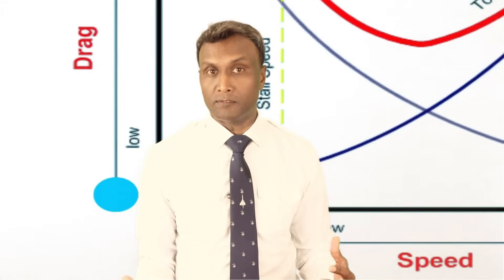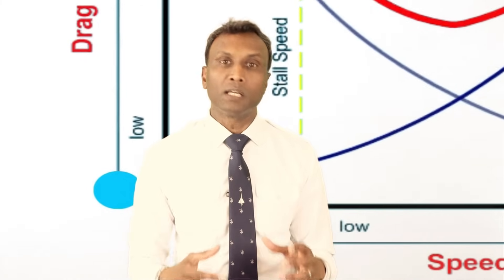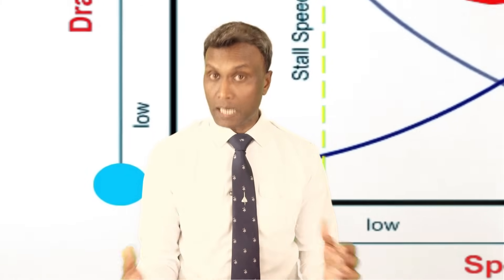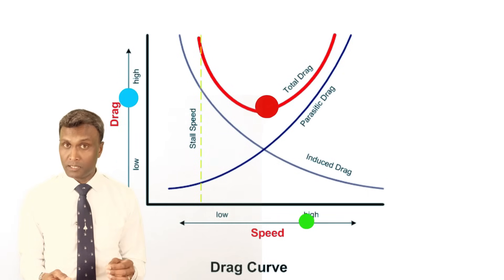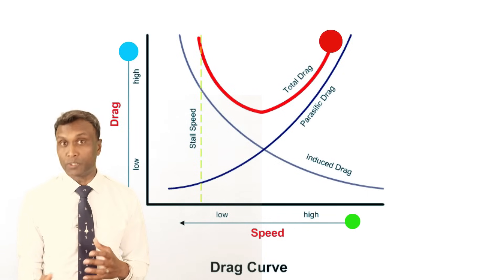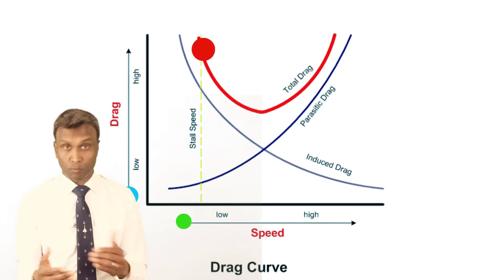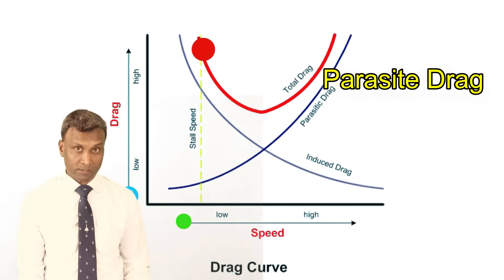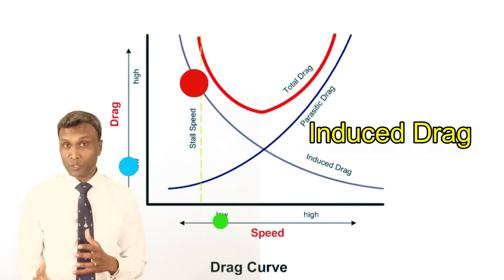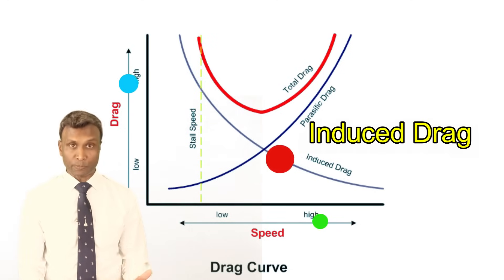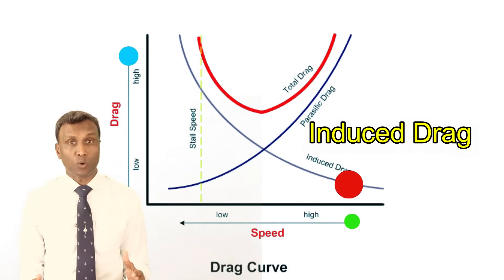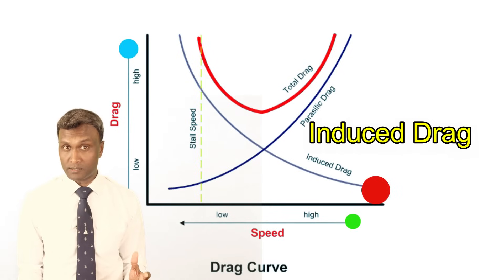As we traverse the skies, pilots navigate the intricacies of the drag curve — a graphical depiction revealing the relationship between drag and speed. This curve is pivotal in unraveling the interplay between two major components: induced drag and parasite drag. Induced drag, a consequence of lift production, decreases with speed and is driven by factors like wingtip vortices and wake turbulence.